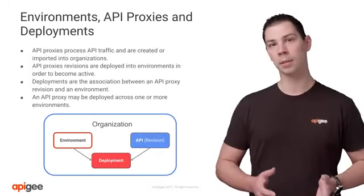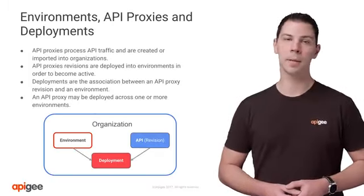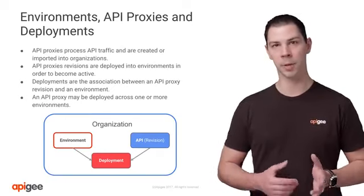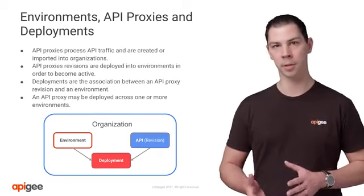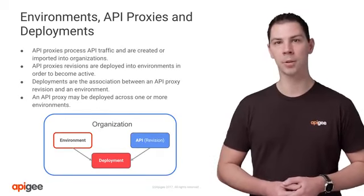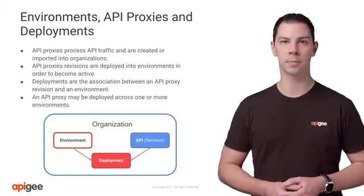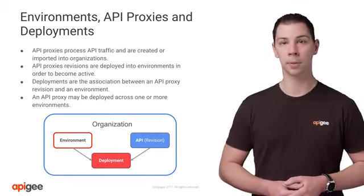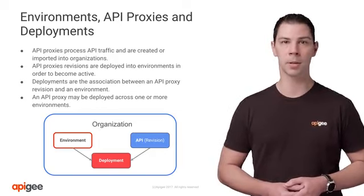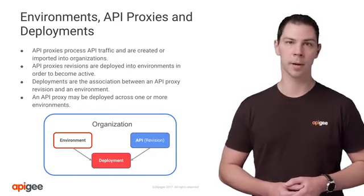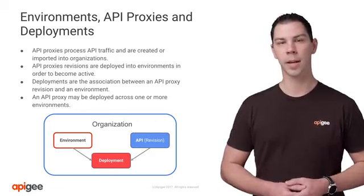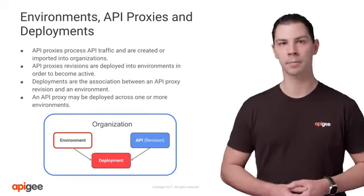Given the logical nature of environments, an API deployment is no more than a logical association between an API revision and the specified environment. On Apigee Edge, APIs are owned by organizations. Deploying APIs to an environment within the same organization does not require code artifact movement. We will explore API deployment in detail later on.